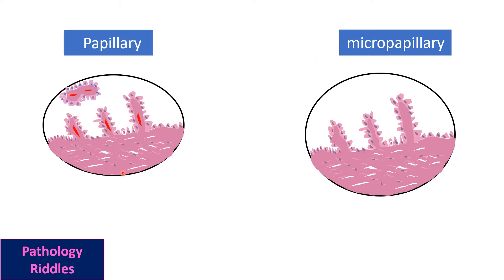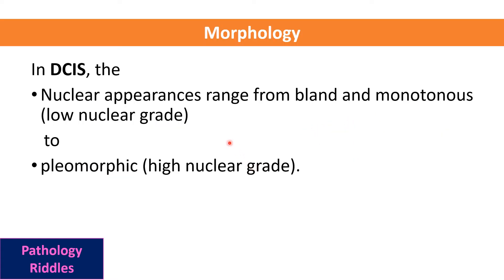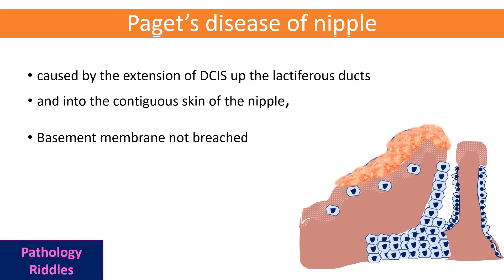Two more variants are papillary and micropapillary. Both have cells which are elongated in papillary form. The only difference between papillary and micropapillary is the presence of a fibrovascular stalk in papillary while it is absent in micropapillary. Morphologically, according to nuclear appearance, DCIS can be graded into low nuclear grade — where nuclei are bland and monotonous — or high nuclear grade, where nuclei have a pleomorphic appearance.